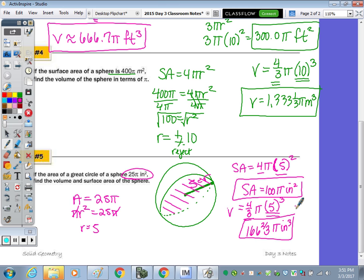Now in the question, it didn't tell me how to leave my answer, or the one above said leave it in terms of pi. If it doesn't tell you, you leave it exact, and exact is in terms of pi. So we don't want to write a decimal because the decimal is rounded. And that includes our notes for day 3 on spheres.